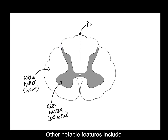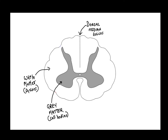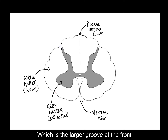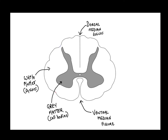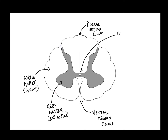Other notable features include the dorsal median sulcus, which is on the back or dorsal side of the cord. The ventral median fissure is the larger groove at the front or ventral side of the spinal cord. The central canal runs down from the center of the spinal cord, and cerebrospinal fluid, or CSF, runs through the central canal.